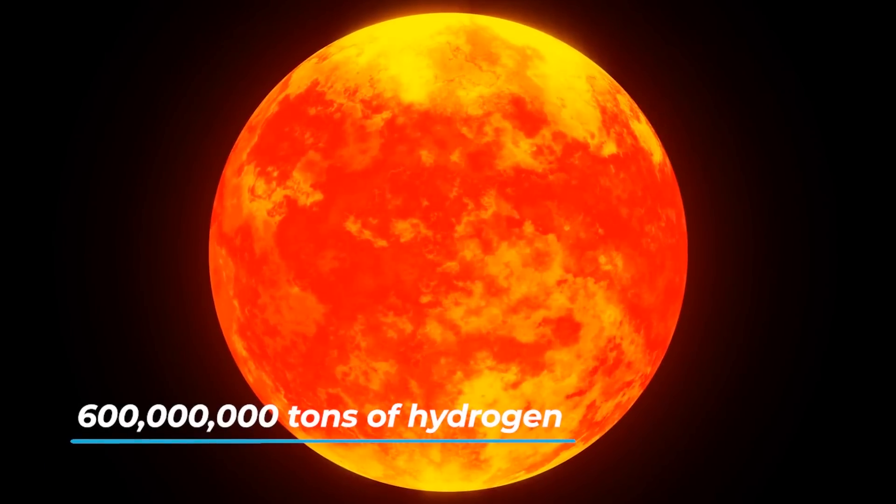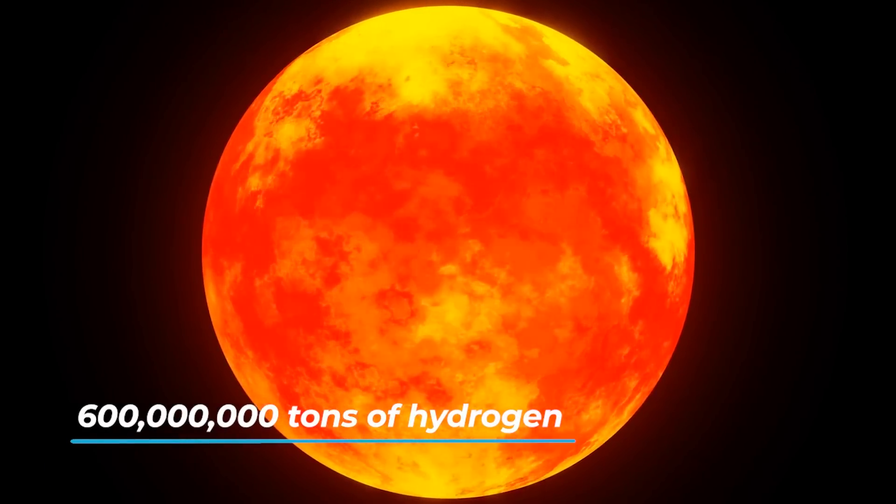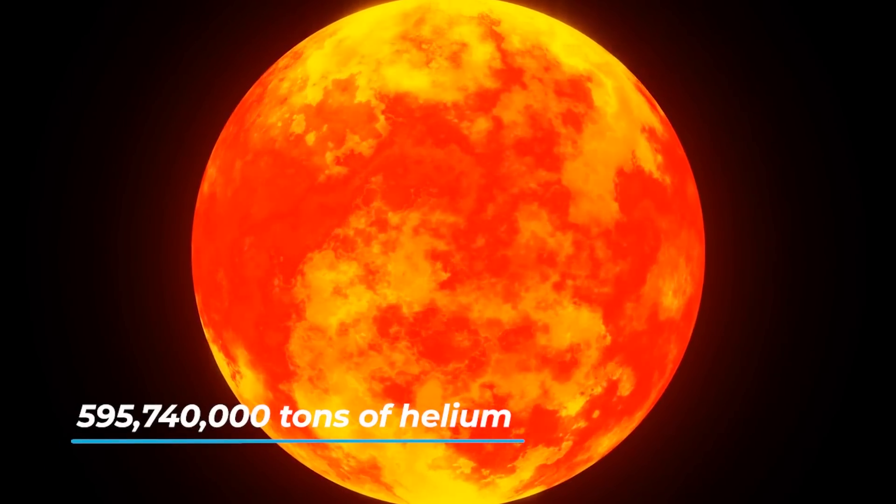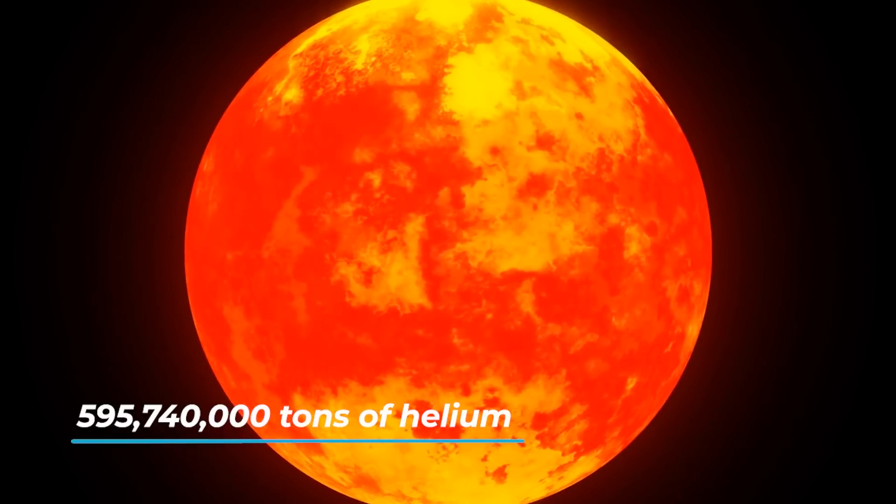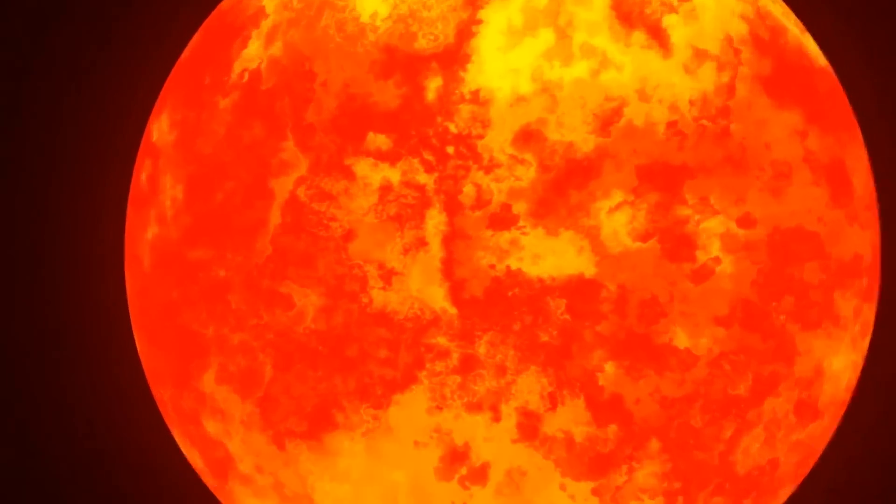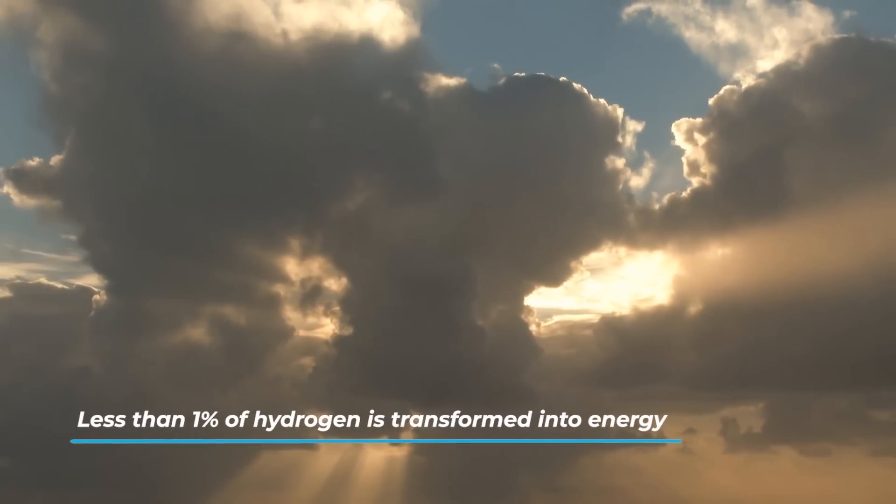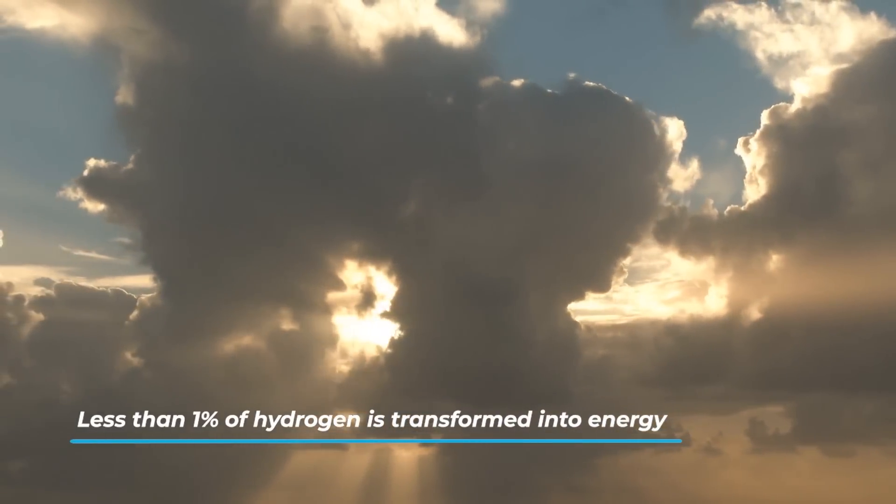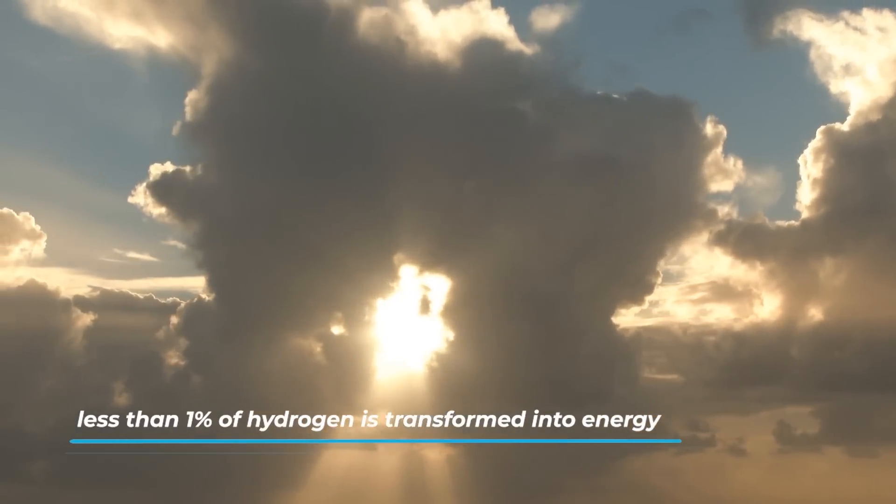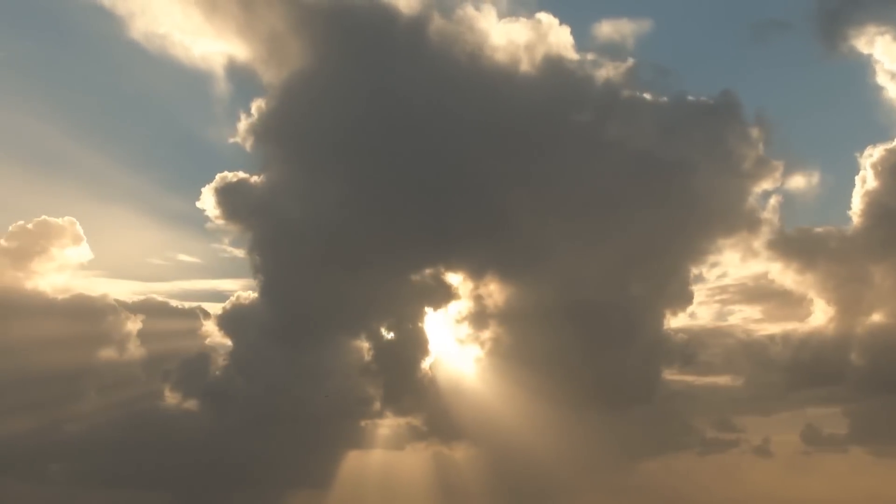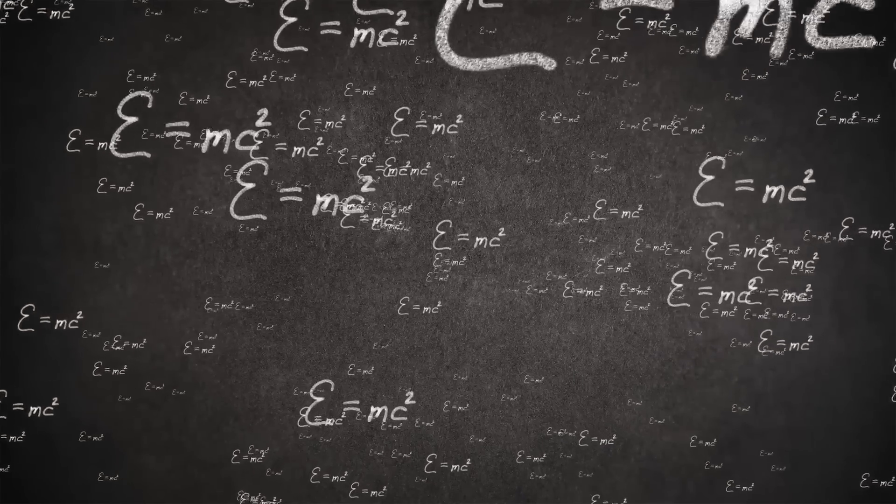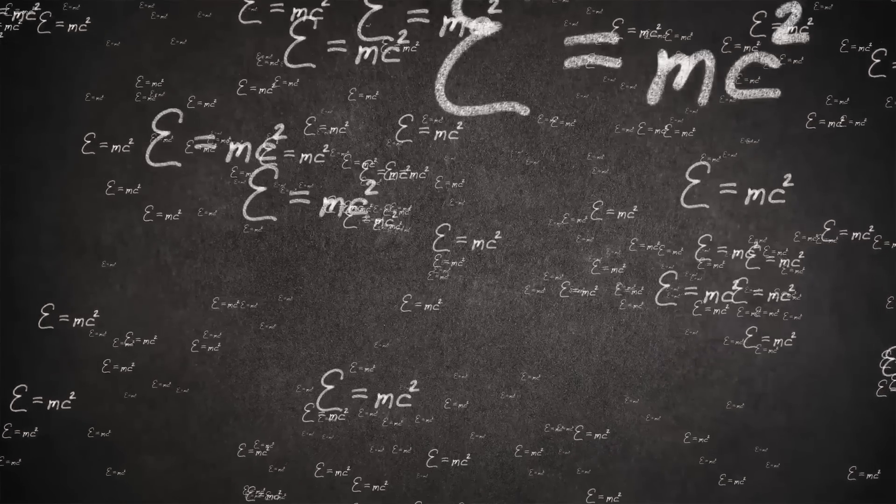Every second in the sun, 600 million tons of hydrogen are converted to 595,740,000 tons of helium. But not completely. In fact, less than 1% of hydrogen is transformed into energy. That is, electromagnetic radiation in accordance with the Einstein equation, E equals mc squared.